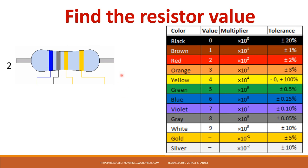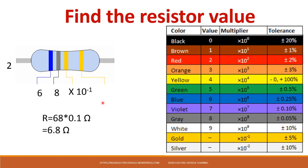For the next question, the bands given are blue, gray, and gold. For blue the digit is 6, for gray it is 8, and for gold the multiplier value is 10 to the power minus 1, which is 0.1. So the total resistance is 6.8 into 0.1, giving 6.8 ohms.